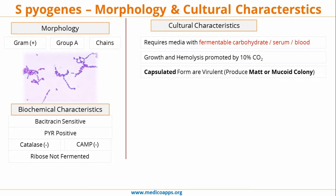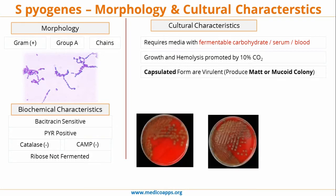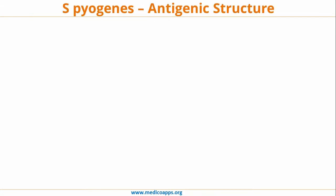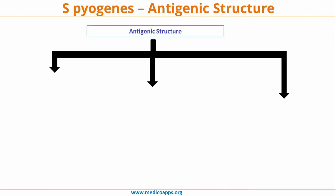The encapsulated form is virulent and produces matte and mucoid colonies, as you can see, whereas the non-encapsulated form is avirulent and produces glossy colonies. So for streptococci, virulence depends upon whether the capsule is present or not. If non-encapsulated, it is avirulent and forms a glossy colony. If encapsulated, it is virulent and forms either a mucoid colony or that same mucoid colony can have a matte appearance later on.